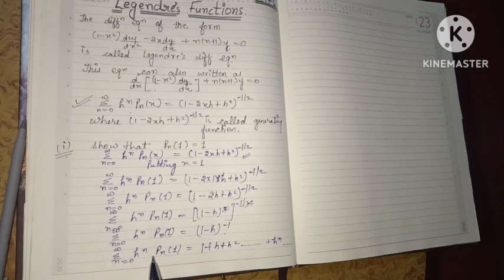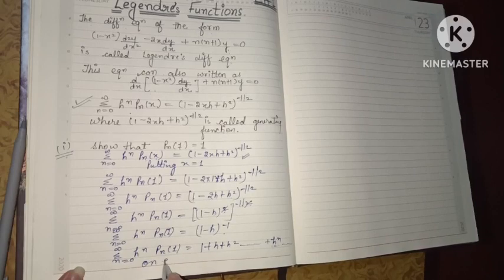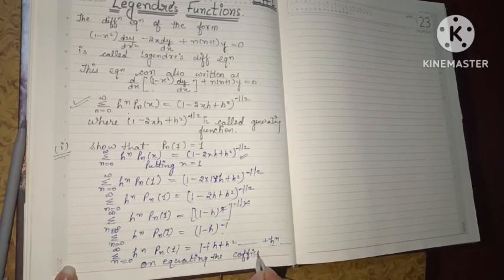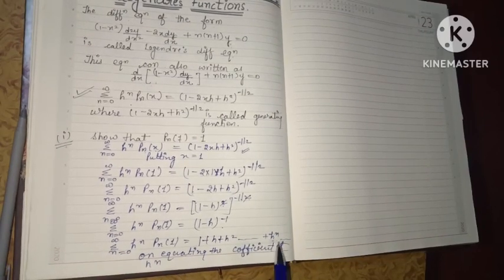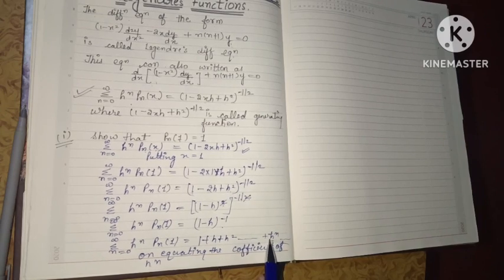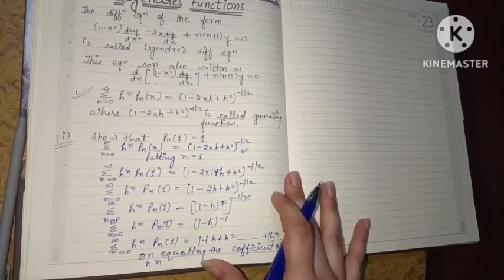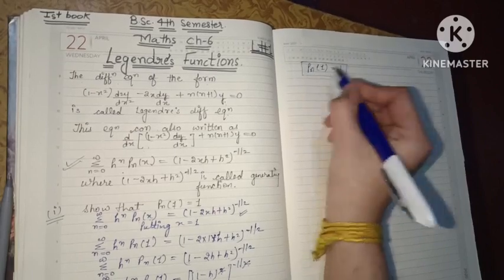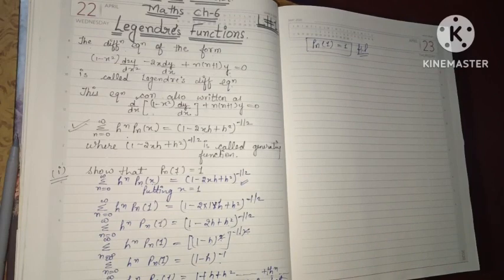On equating the coefficient of h to the power n, from the LHS we get P_n(1), and from the RHS we get 1. So hence proved. These questions are easy and formula-based — there should be no doubt. Let us do one more question on this same formula to completely clear the concept. We just proved P_n(1) equals 1; now let us take a new question: show that P_n(0) equals 0.